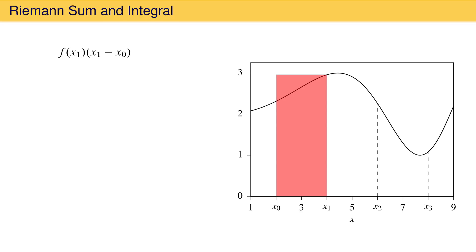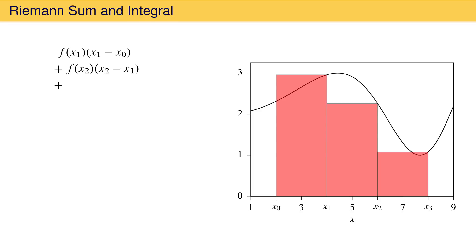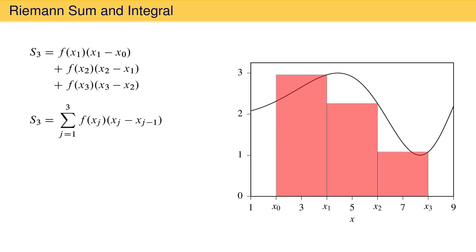To estimate the area under the curve, we add the area of the rectangle in the next region: its height, the value of the function at x2, times its width, x2 minus x1. Finally, we add the area of the rectangle in the third region: the value of the function at x3 times x3 minus x2. We call this sum capital S with a subscript of 3. Using summation notation with variable j from 1 to 3, the argument is the height f(xj) times the width xj minus xj-1, which can be written compactly as delta xj.